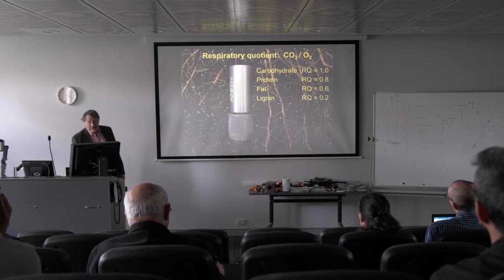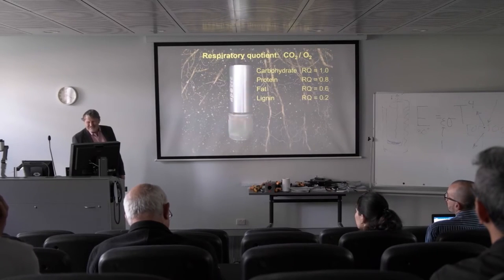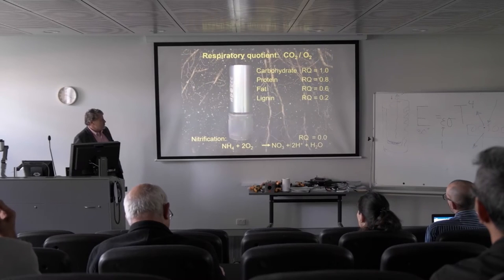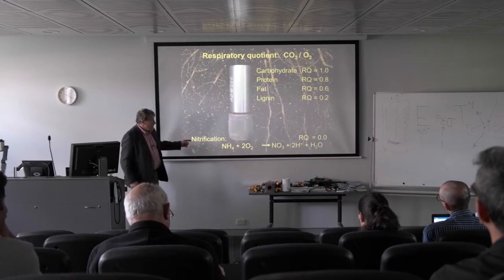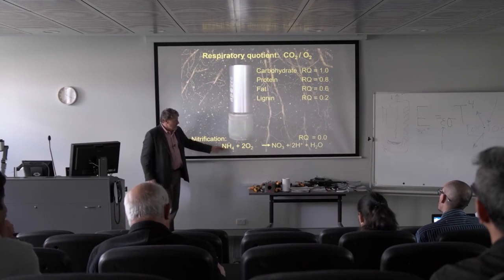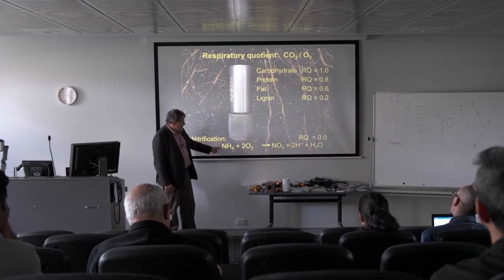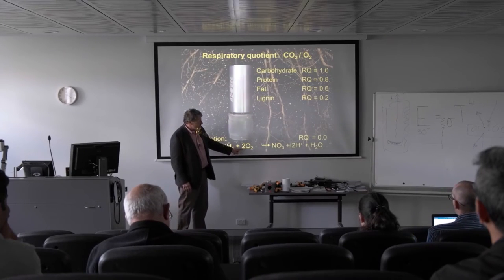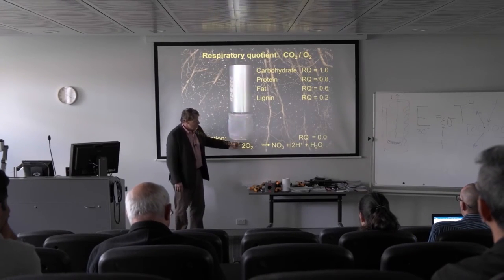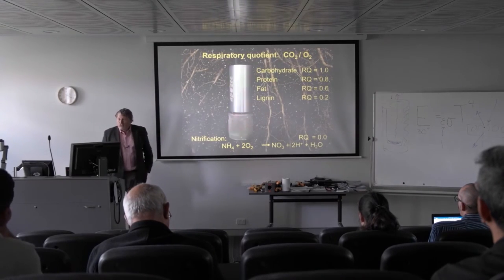There are researchers already asking how that sensor is coming along — very anxious to buy them as soon as we announce it. Here's another huge application: we know that ammonium in an ecosystem is gradually oxidized by bacteria to nitrate. That nitrification respiratory quotient uses two oxygen and makes no CO2, so it's zero. We can begin to tell what forms of nitrogen the bacteria are utilizing in a soil.